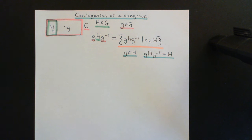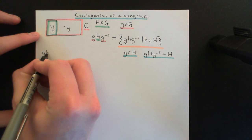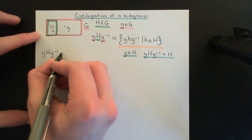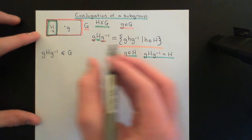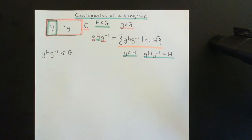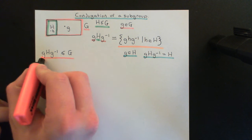What I now want to prove is that this conjugate gHg⁻¹ under the element little g is always going to be a subgroup of capital G as well. When I conjugate the subgroup capital H by some element of the group — whatever element I pick — this is actually going to be a subgroup of capital G. So far, what we know is that it's going to be a subset; it's not clear yet that it's going to be a subgroup.